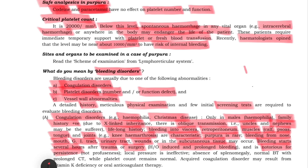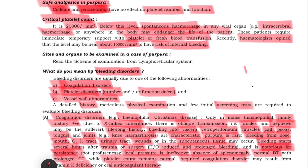If you have bleeding from a coagulation disorder, it will persist quite a bit and is not easily stopped. Local pressure also helps to stop this bleeding. The bleeding time is normal, but the clotting time is prolonged in coagulation disorder. The acquired coagulation disorder includes vitamin K deficiency or oral anticoagulation therapy.